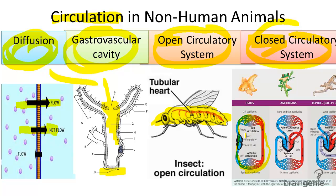Blood can flow in loops, or circuits, and these can be simple to complex. The pump itself can also vary — from two-chambered hearts in fish, to three-chambered hearts in amphibians, and four-chambered hearts in birds and mammals.